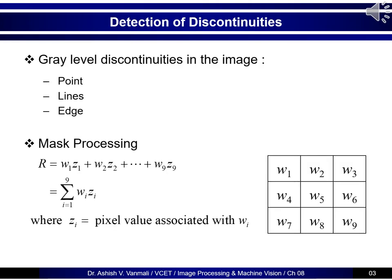In images, we normally have three types of basic discontinuities. The first one is point, the second is lines, and the third is edges. Whenever we want to detect these discontinuities, we use the process of mask processing or spatial domain filtering, where we use a spatial mask normally of odd size. We find the resultant value as a weighted sum of the mask weights and the corresponding underneath sub-image, and then we compare that result with a particular threshold and based on that we take a decision.